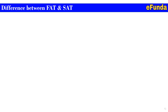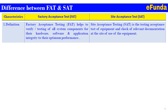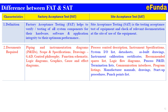Now we have already created videos on FAT and SAT separately. We will now see the comparison or difference between FAT and SAT; for that we have specifically created a table comprising characteristics comparison for FAT and SAT. First point is the definition: factory acceptance testing (FAT) helps to verify testing of all system components for their hardware, software, and application integrity to their optimum performance. Under SAT: the site acceptance test is the testing and acceptance of the equipment and check of the relevant documentation at the site of use. Second — documents required under FAT: P&ID, scope and specifications, drawings like GA drawing, control philosophy, functional schematic, logic diagram, graphics, cause and effects are required.